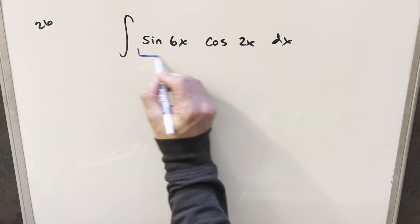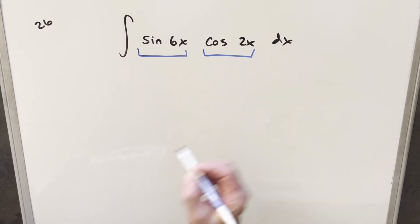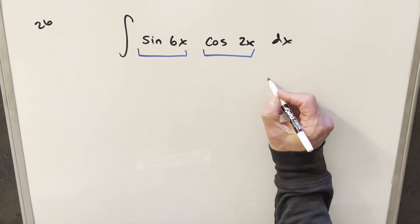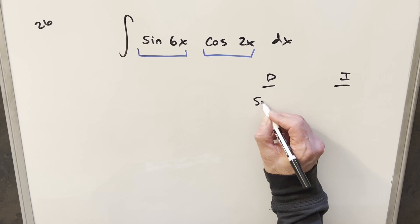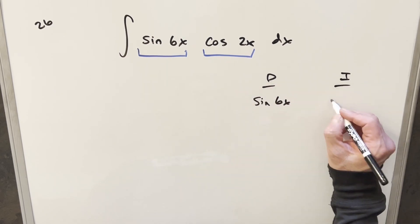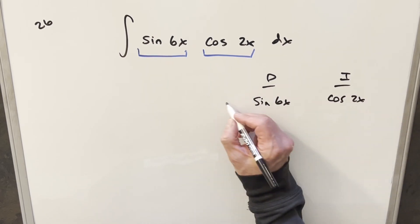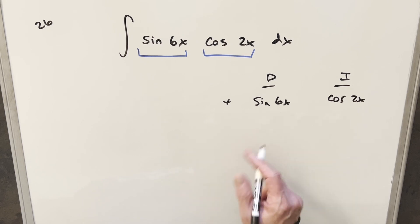I think what I want to do is differentiate this piece and integrate this piece. It doesn't really matter which way we choose it, so let's go with this. I'm going to do the DI method, or tabular integration, over here to the right. Differentiating sine 6x, and we'll integrate cosine 2x. And then we'll just go ahead. I think we're going to do this three times, and we'll see why in a second.